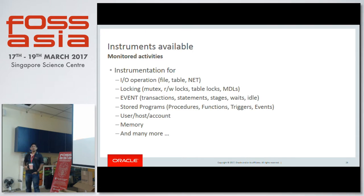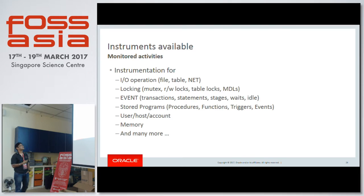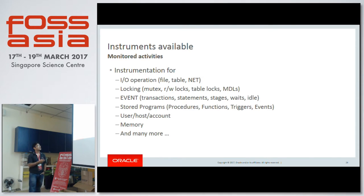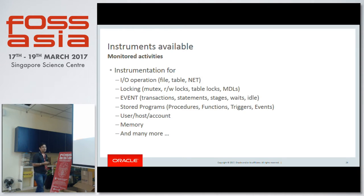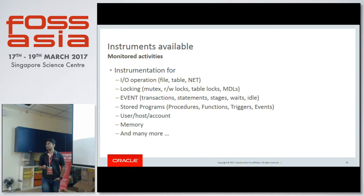The instruments available in 5.7 include: IO operations (file IO, table IO, socket IO); locking (mutexes, rwlocks, mdl locks); events (transactions, statements, stages, waits, idle); stored programs (functions, triggers, events, procedures); statistical information categorized by user, host, account, thread, and global; and memory allocation and deallocation monitoring.